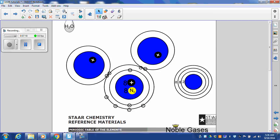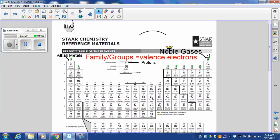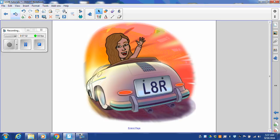Every element wants to be like the noble gases and have a full outside ring with valence electrons. So hopefully this helps a little bit with valence electrons and family groups. Until next time. See you later.